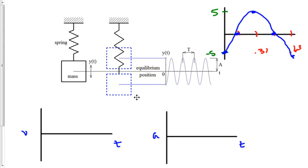Welcome back for video 5. Our job now is to still deal with the spring going up and down in a vertical position. We've already graphed the amplitude versus time graph, and we're now going to do a graph of velocity versus time.